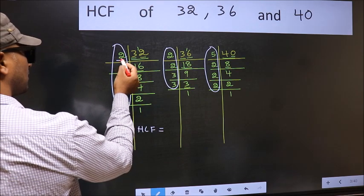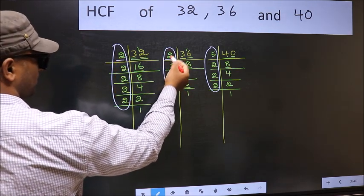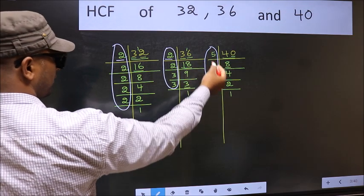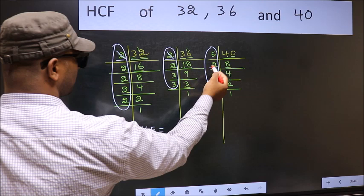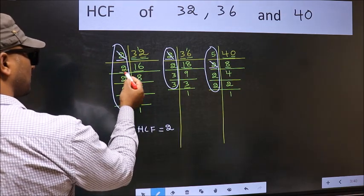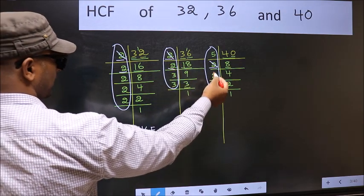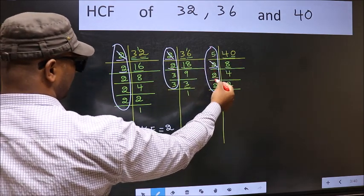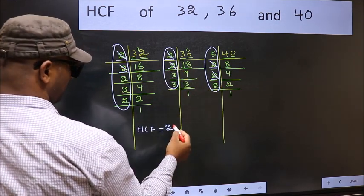Starting with the number 2. Do we have 2 here? Yes. Go to the next place. Do we have 2 here? Yes. So cut 2 right here. Now next number 2. Do we have 2 here? Yes. Go to the next place. Do we have 2 here? Yes. So cut 2 right here.